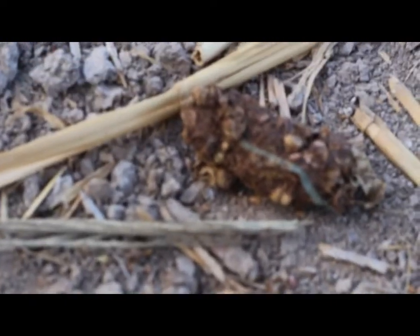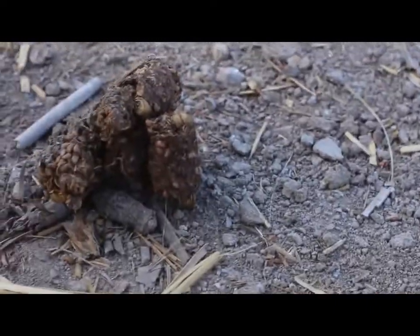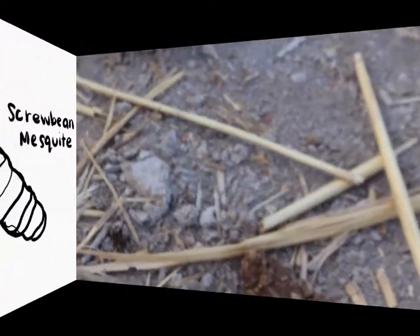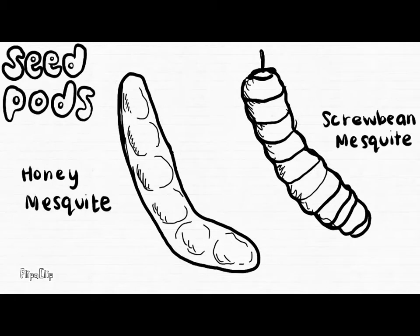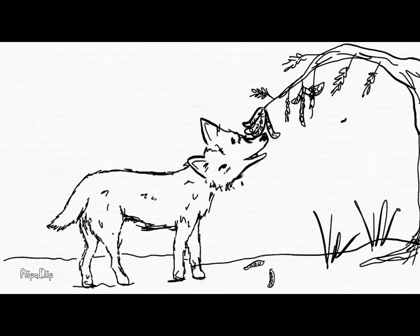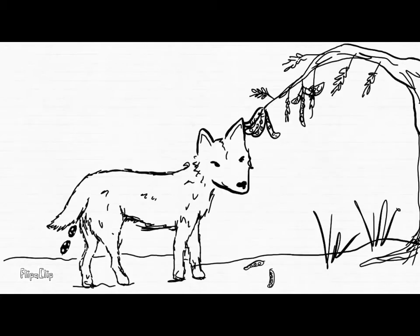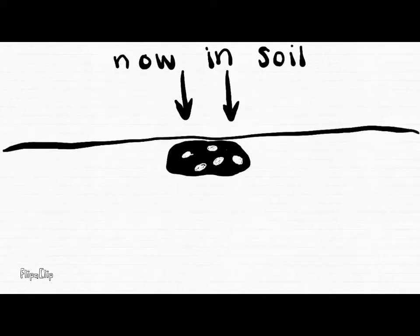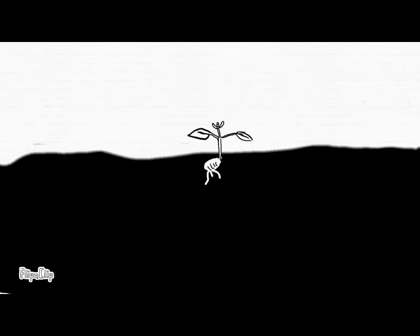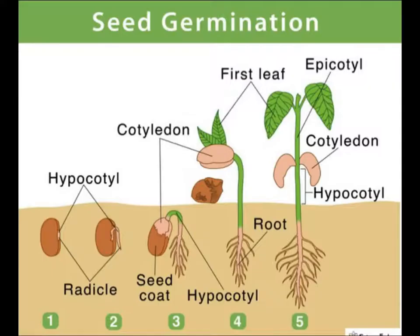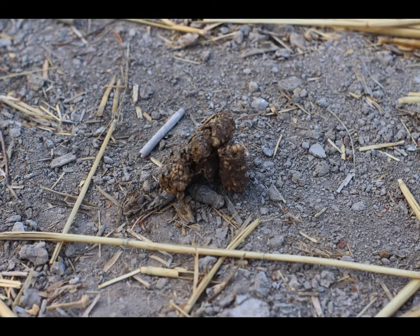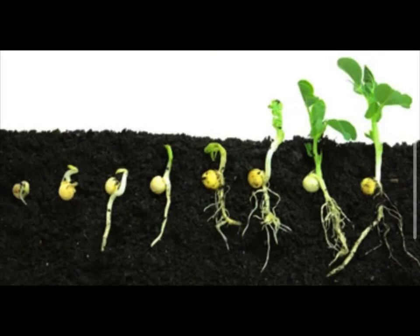Coyotes are important to mesquite trees due to a process called scarification. Scarification is basically when the coyote will eat the mesquite seed pods that it finds either on the ground or still in the tree. Once the coyotes have eaten the mesquite seed pods, it will travel through the coyote's digestive system, which is how the coyote breaks down food. The acids in the coyote's stomach will cause an outer coating on the seed to break open, allowing it to undergo the germination process. Once the coyote poops out the seed pods, the seed is now ready to undergo the growth process, and will settle into the soil, absorb water, and then begin to grow.